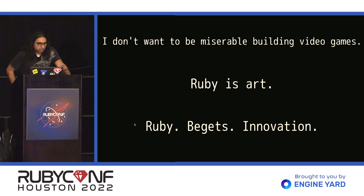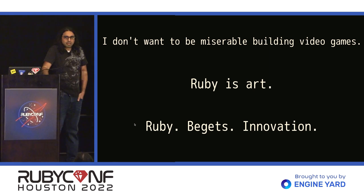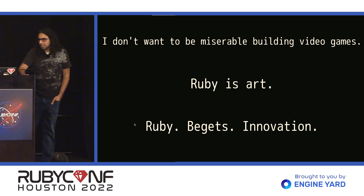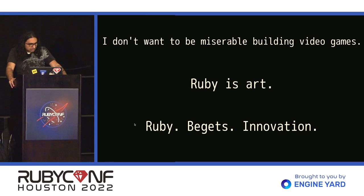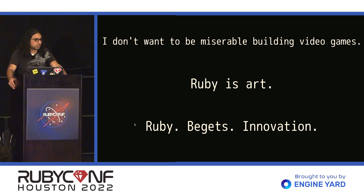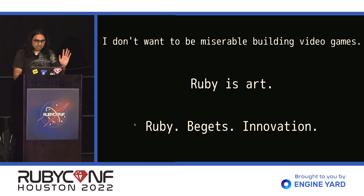One of the most important things is that Ruby begets innovation. Think about how the past 25 years that Ruby's been around, it's changed the landscape of technology and how we build software. We would still be using Spring today if it wasn't for Ruby. And just to show you this idea of innovation — these aren't PowerPoint slides. This is actually the game engine running PowerPoint slides. But we're going to do something better now.